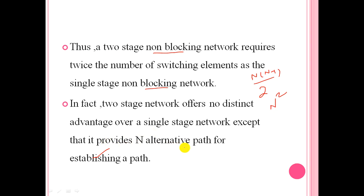The conclusion is that a two-stage network offers no distinct advantage over a single-stage network, except that it provides an alternative path for establishing connections. Single-stage networks do not provide any alternative path, but two-stage networks do — though they also require twice as many switching elements. That is why two-stage networks are not preferred, and we use three-stage networks, which we will discuss in the next lecture.